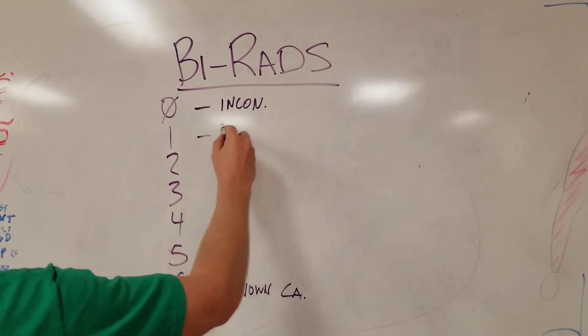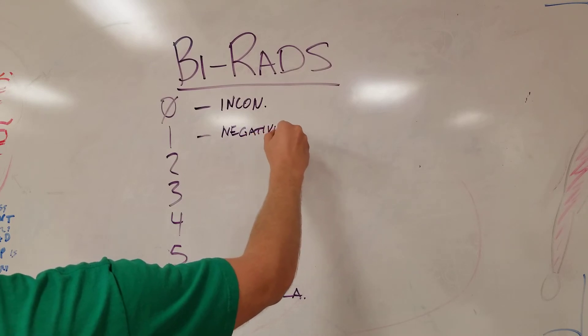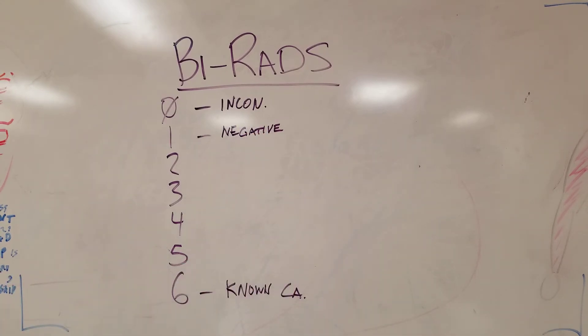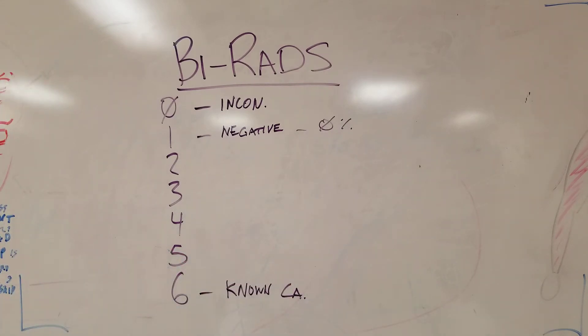Number one is negative, meaning no lesions of any kind. These are the most normal breasts in the world, and that has essentially a zero percent risk of malignancy. Actually, BI-RADS 1 imaging is pretty rare because most times people getting mammograms have something to talk about.